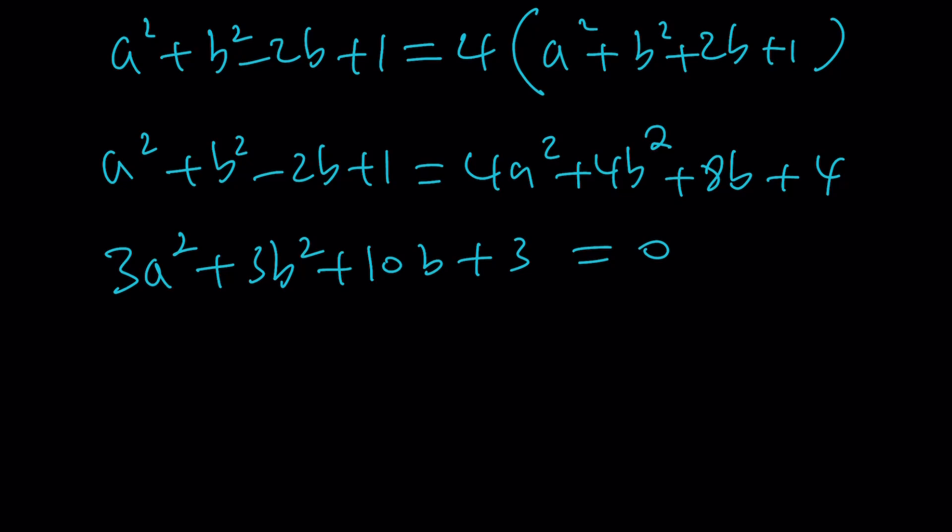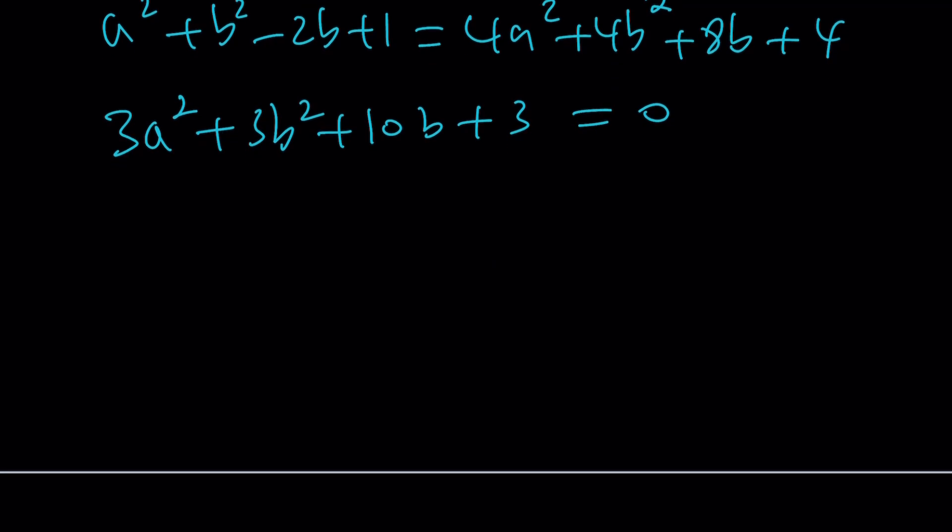That gives us three a squared plus three b squared plus 10 b plus three equals zero. And guess what this is? This is the equation of a circle. But first, we need to multiply now. Well, you can multiply by one third. We need to divide both sides by three to get a squared plus b squared plus 10 over three b plus one equals zero.